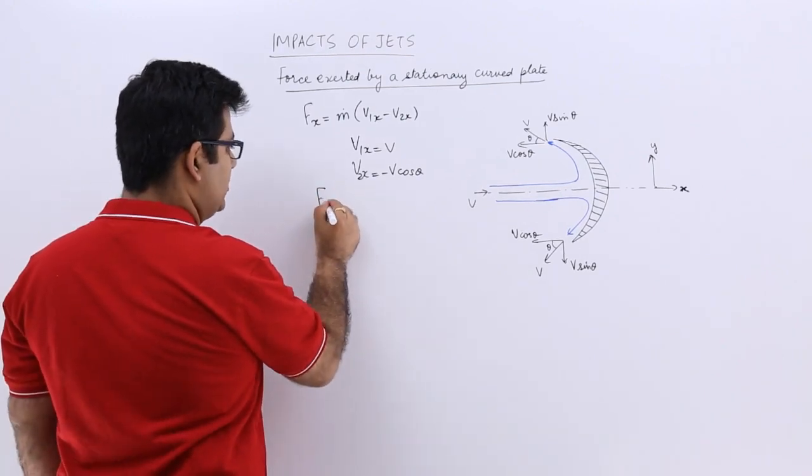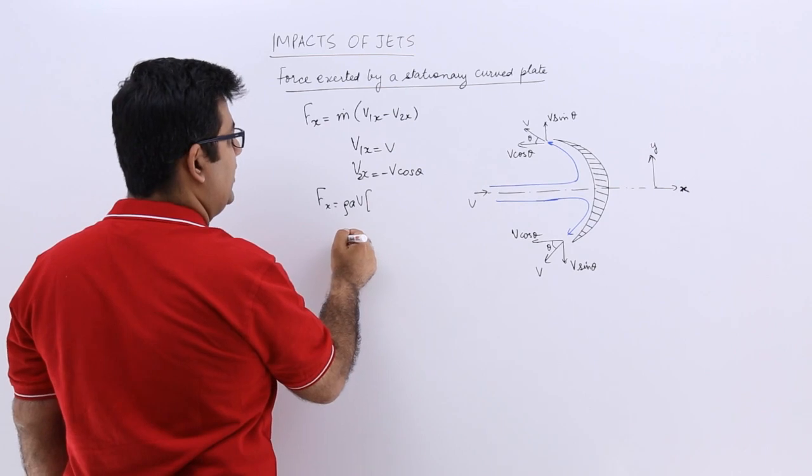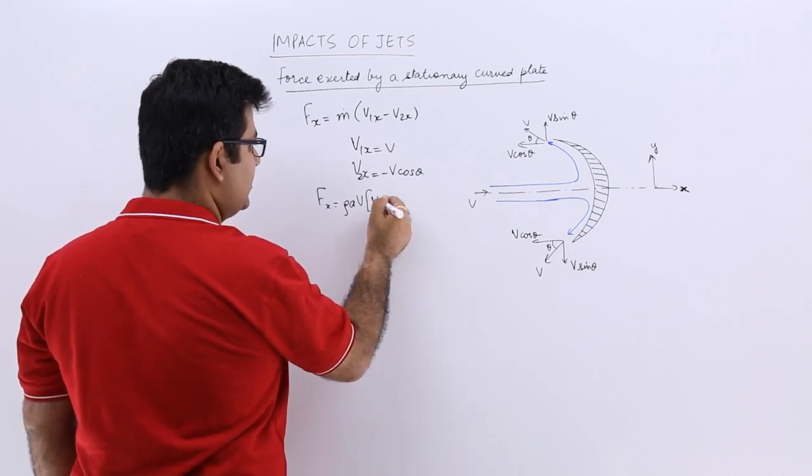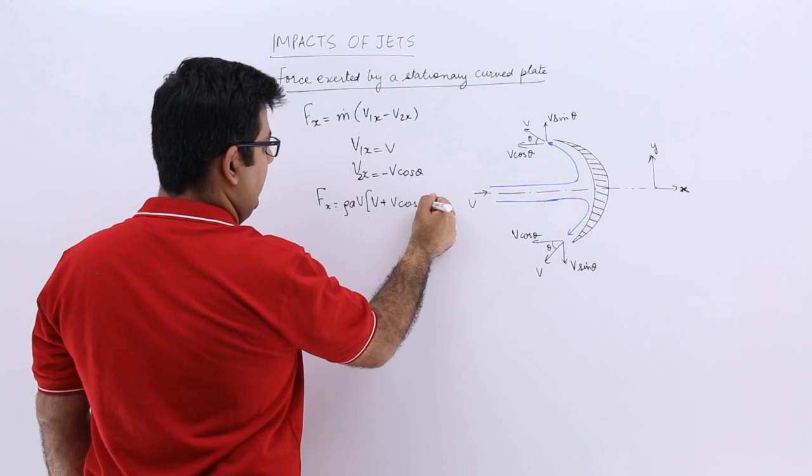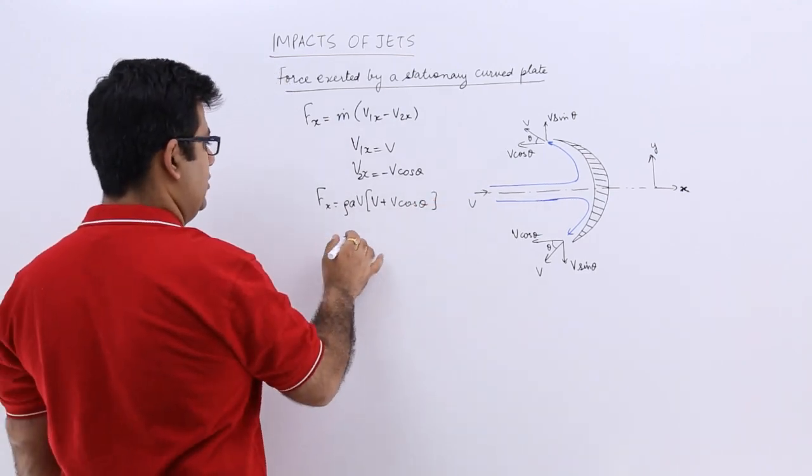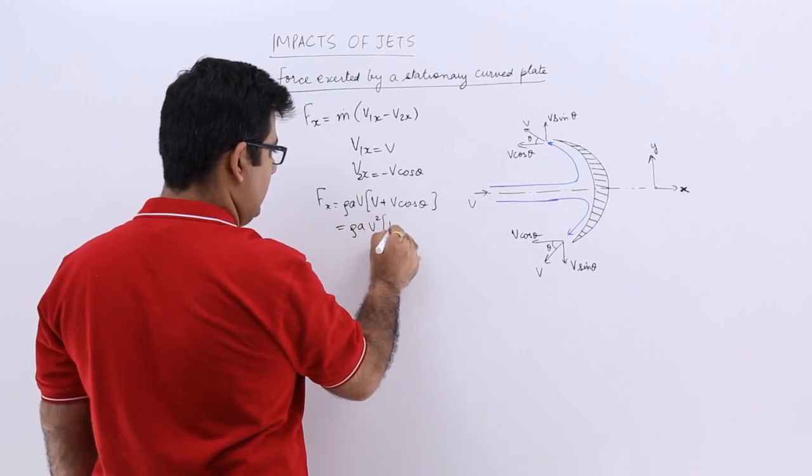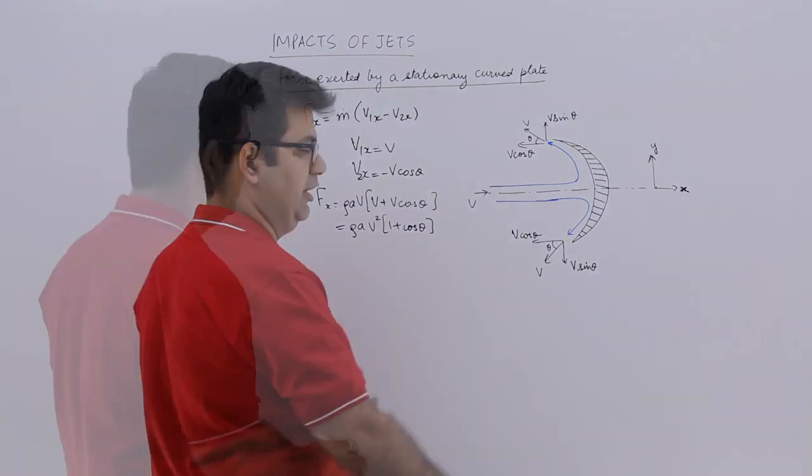So Fx will become ρAv into v minus, minus minus becomes plus, and this will be v cos theta. You can take v common so you will get ρAv² into 1 plus cos theta.